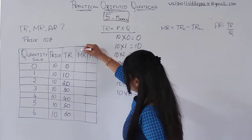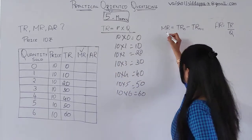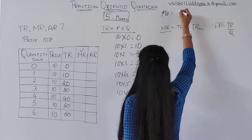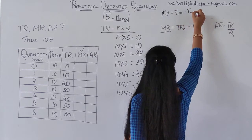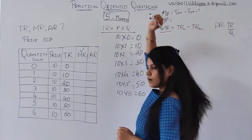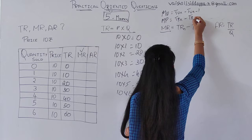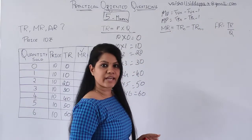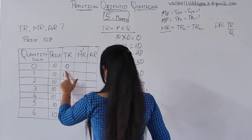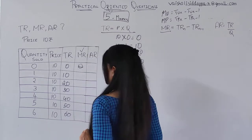Next, you have one more component to find out — that is marginal revenue. How are we going to find out marginal revenue? In the previous classes we found marginal utility using the formula TU(n) minus TU(n-1). To find out marginal product, the formula was TP(n) minus TP(n-1). Exactly the same kind of formula we use to find marginal revenue. The methodology is also the same — so for the first entry you continue with 0, or leave it blank.